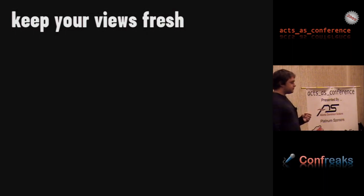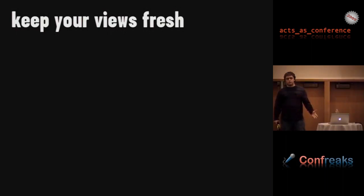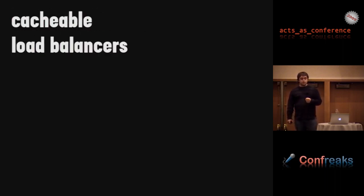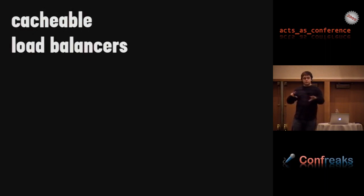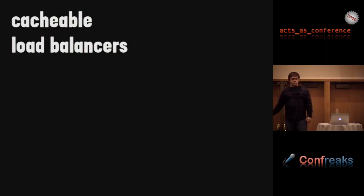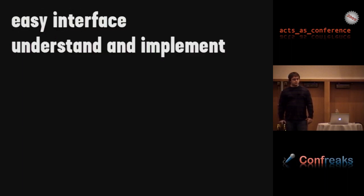Since CouchDB is built on HTTP and REST, you get some benefits. The biggest is that it's cacheable using existing tools like reverse proxies and load balancers. You can have a cluster of CouchDB servers and you don't need special tooling — your standard stuff you're already using will work straight up. And since it's using REST, we're all familiar with it and it's easy to use.